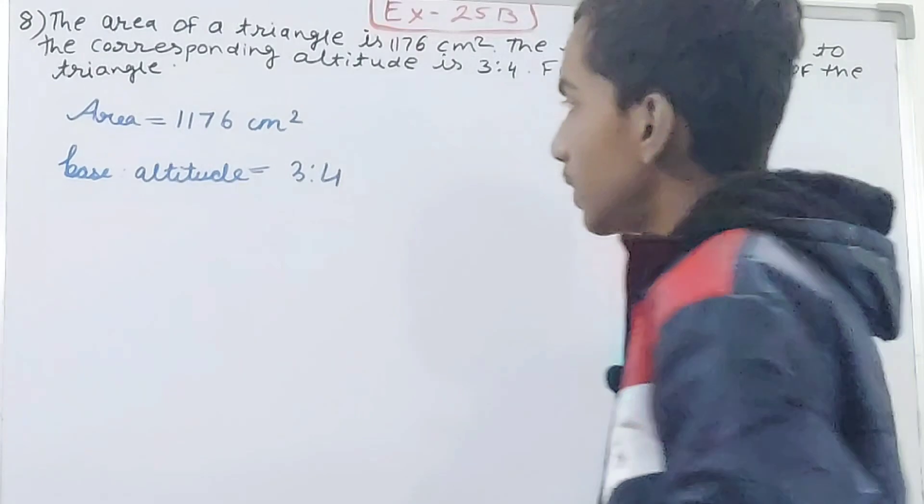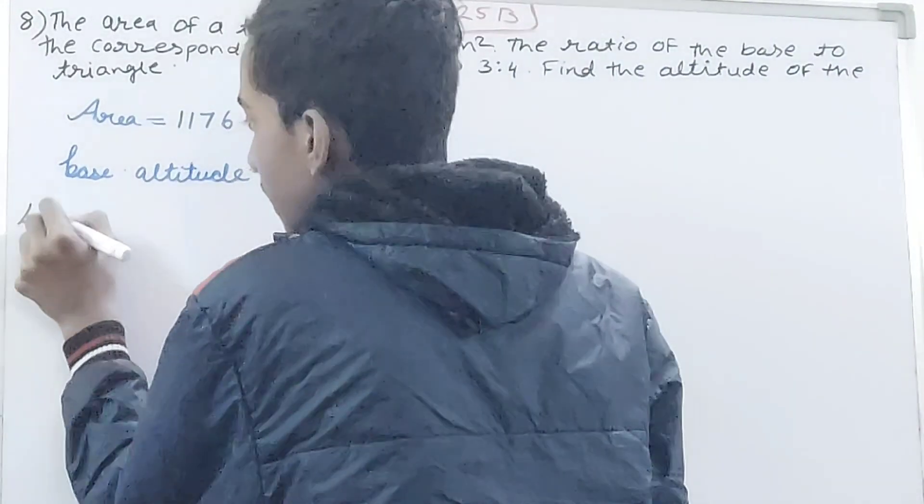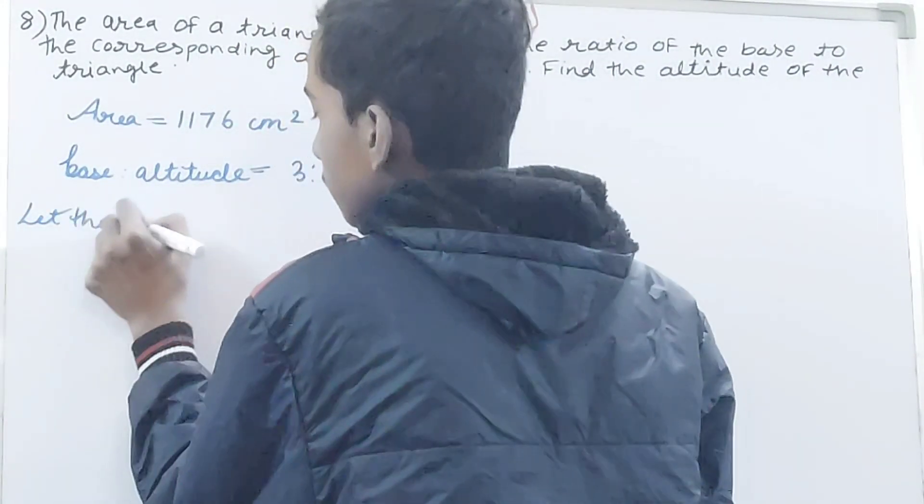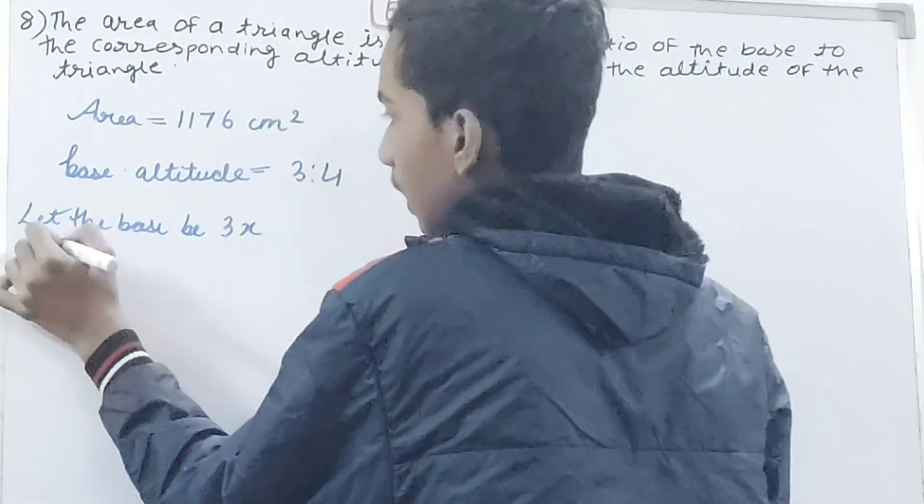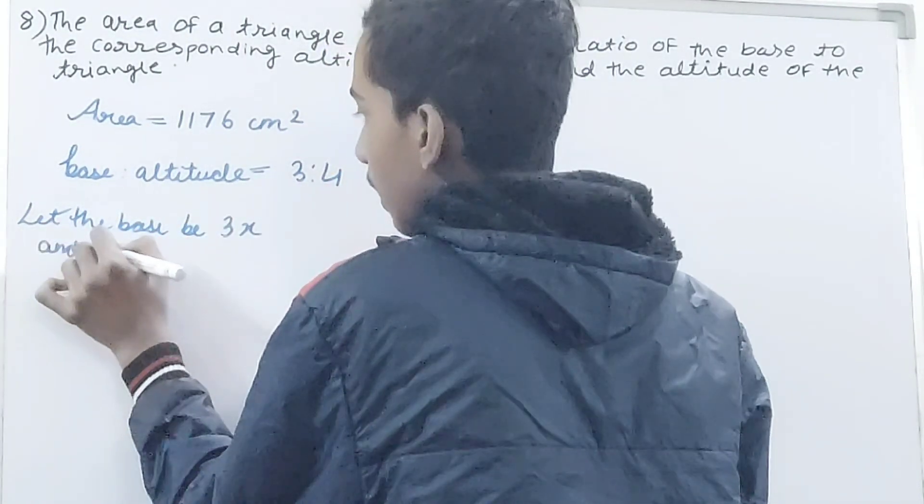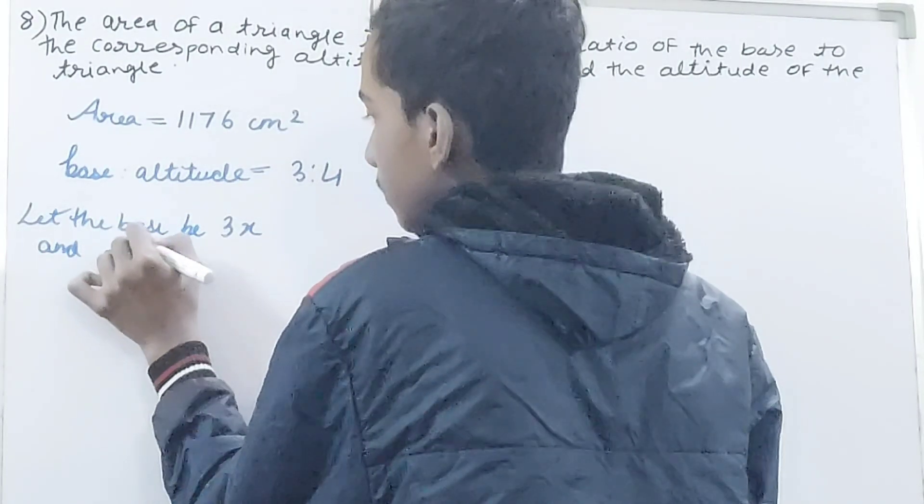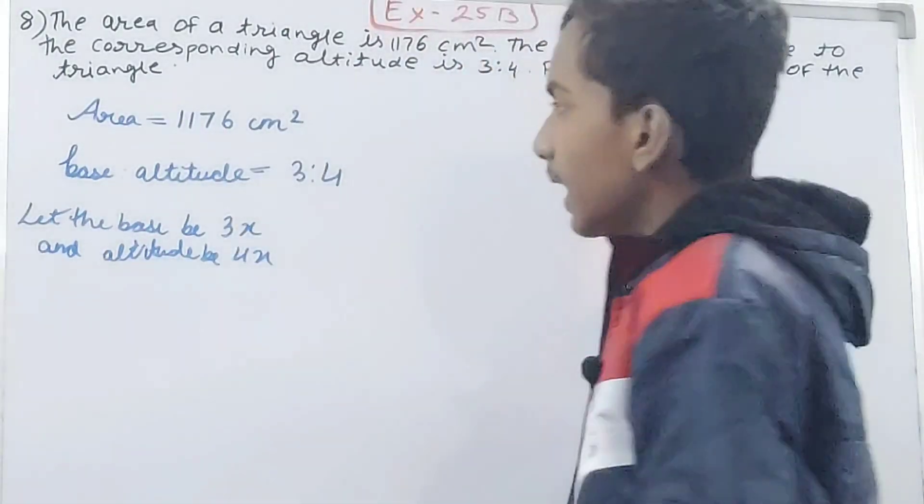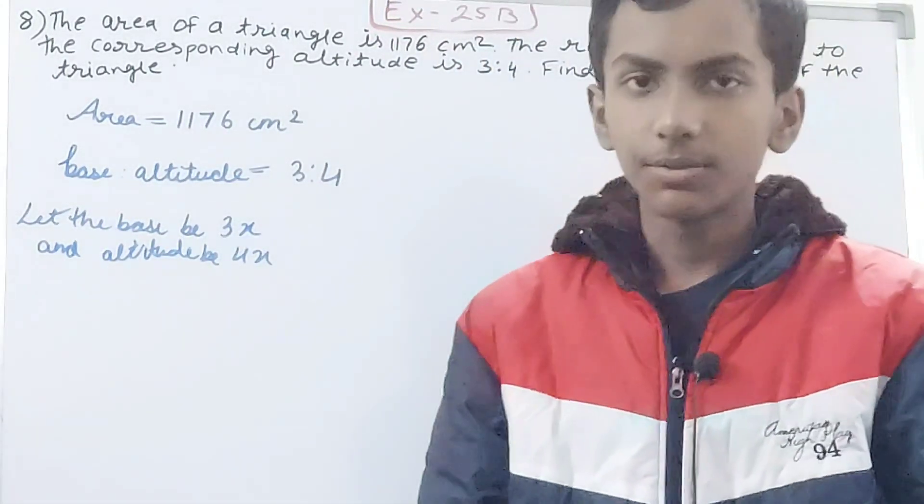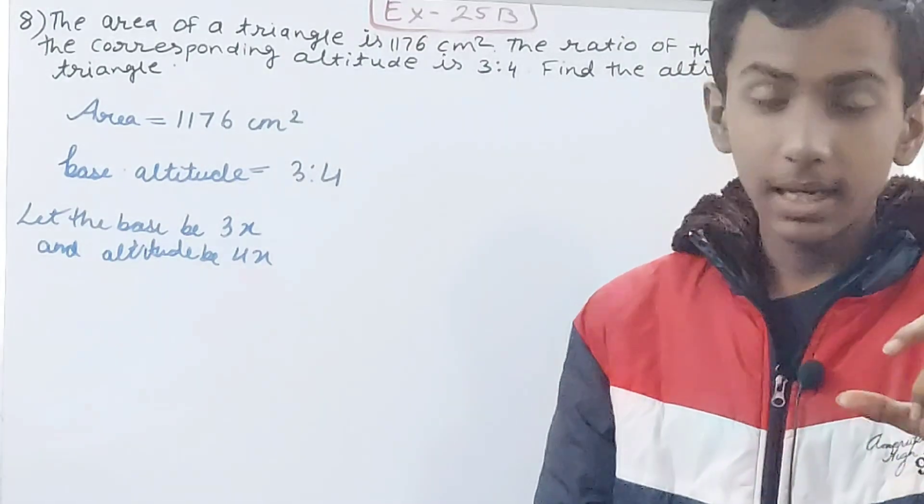So see, let the base be 3x and altitude be 4x. You can see that using that ratio that we have, we have assumed the values of the base and the height.